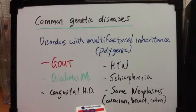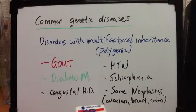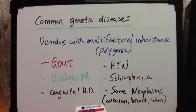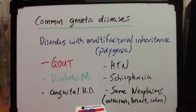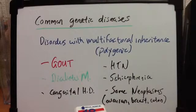Disorders with multifactorial inheritance — we're talking about polygenic disorders — involve the influence of multiple genes and environmental factors. They are relatively frequent, and some examples are listed here. We're going to talk about gout in a second.